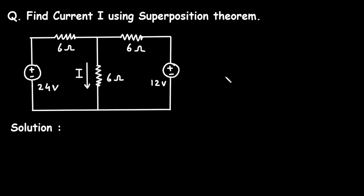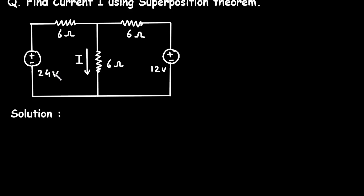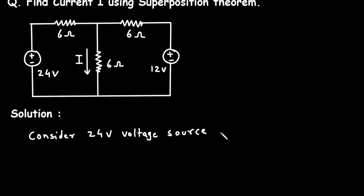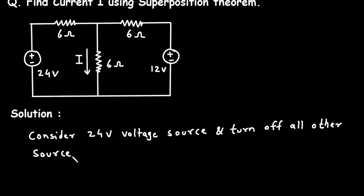Solution. First of all, we will consider this 24 volt voltage source and turn off all other sources. Step number one is to consider 24 volt voltage source and turn off all other sources. When we consider this 24 volt voltage source and turn off all other sources, the only other source is this 12 volt, and when we turn off this 12 volt voltage source, it will be replaced by a short circuit.